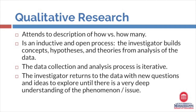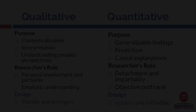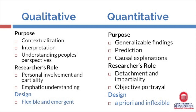Some of the key distinctions between qualitative and quantitative research include qualitative research looking at relationships from the lens of observable cases, whereas quantitative research looks for correlations demonstrated through statistical analysis. Other key differences include the purpose, the role of the researcher, and the primary design. In qualitative research, the focus and the purpose is understanding people's perspectives, whereas in quantitative research, the focus is on causal explanations built through statistical analysis of correlations and other relationships.